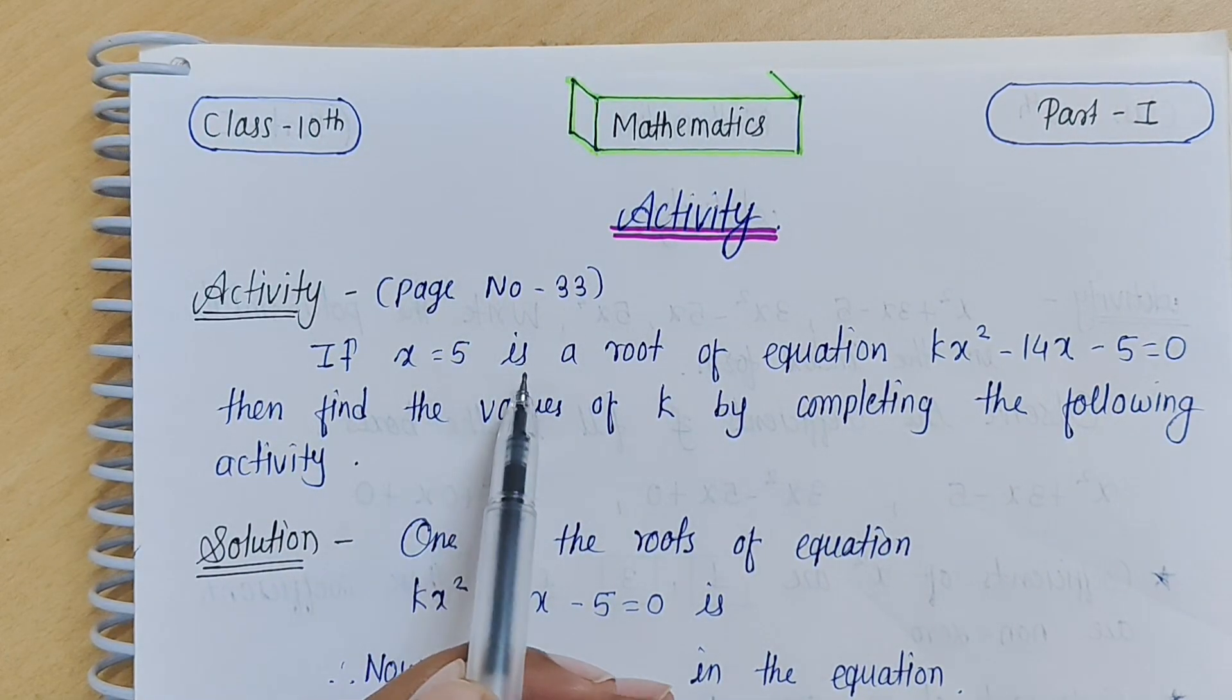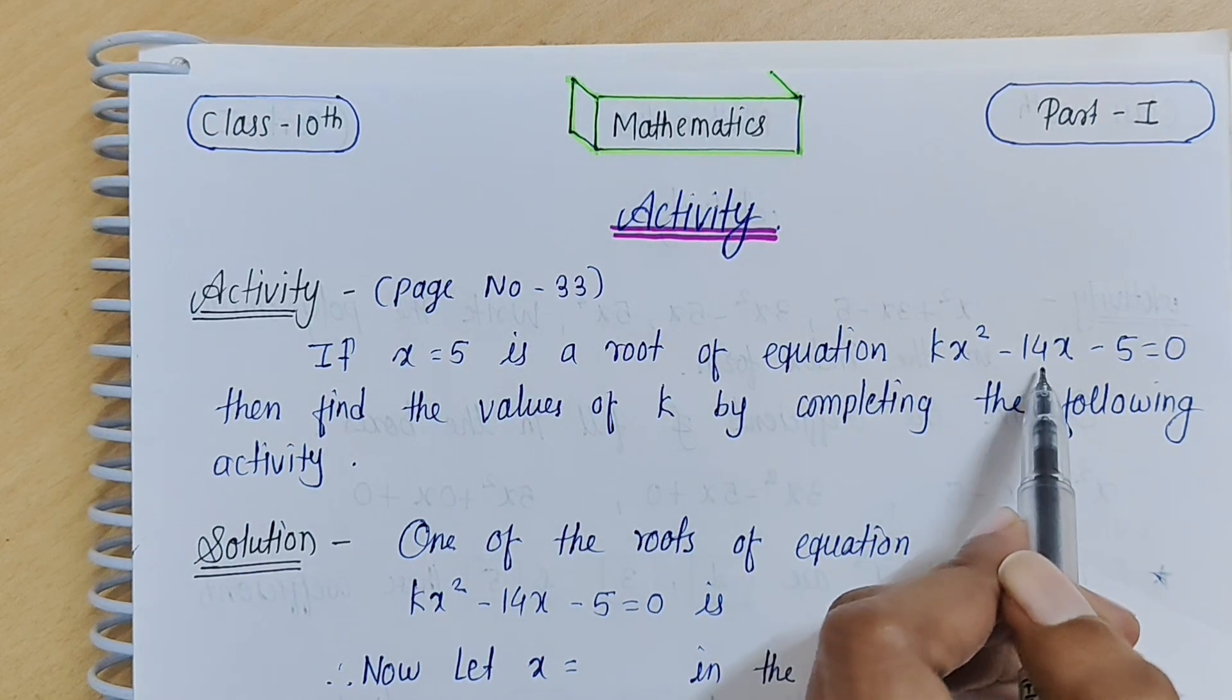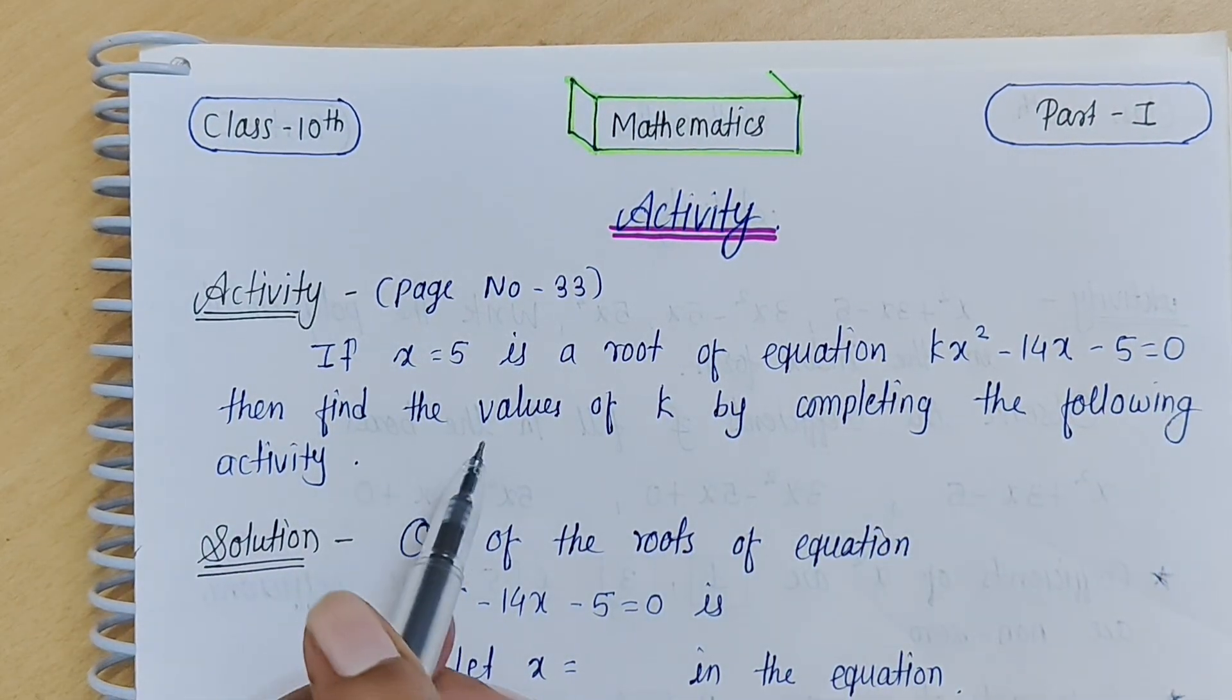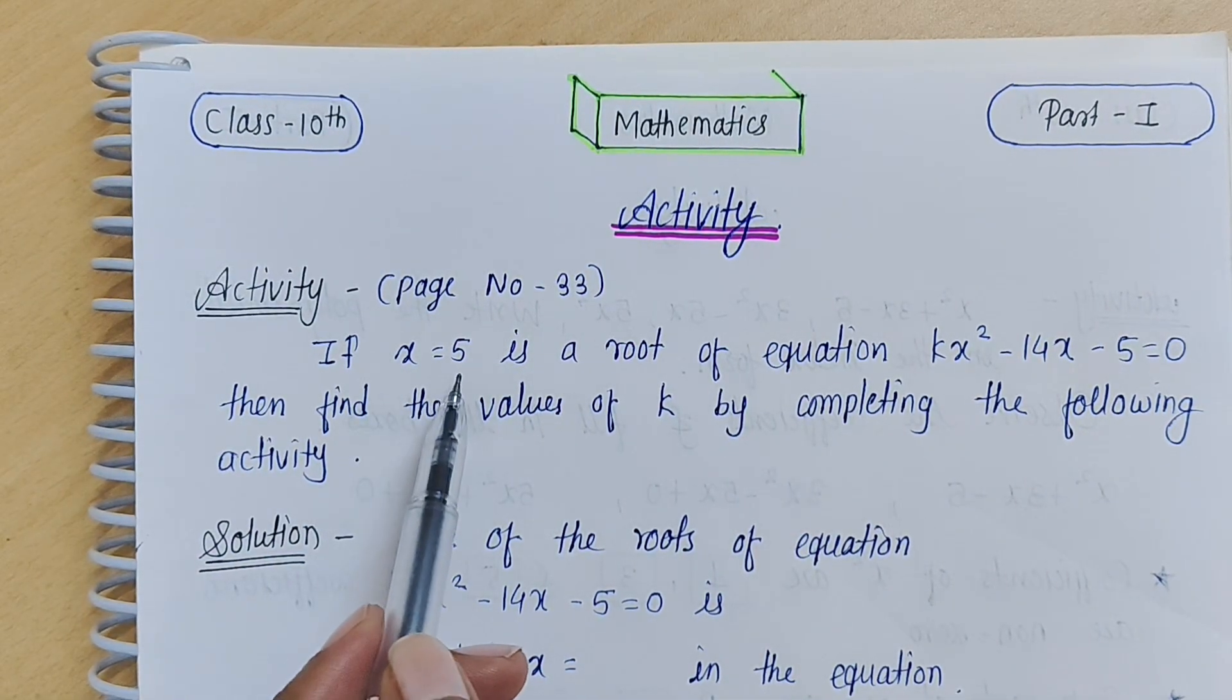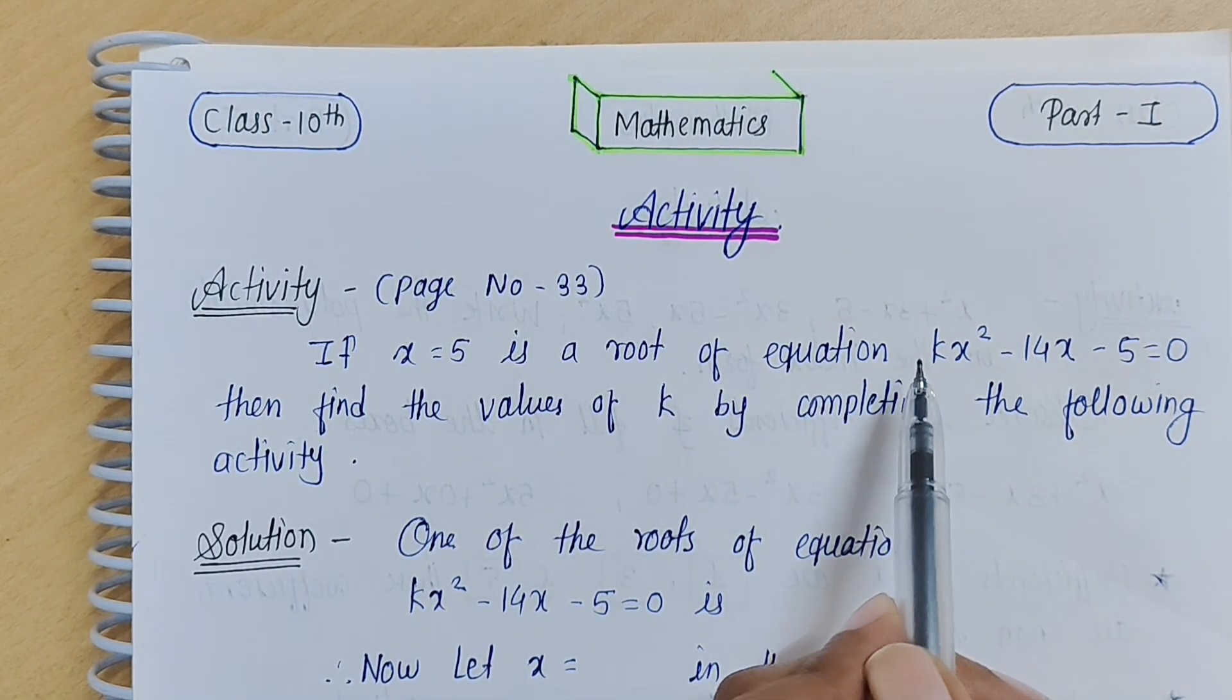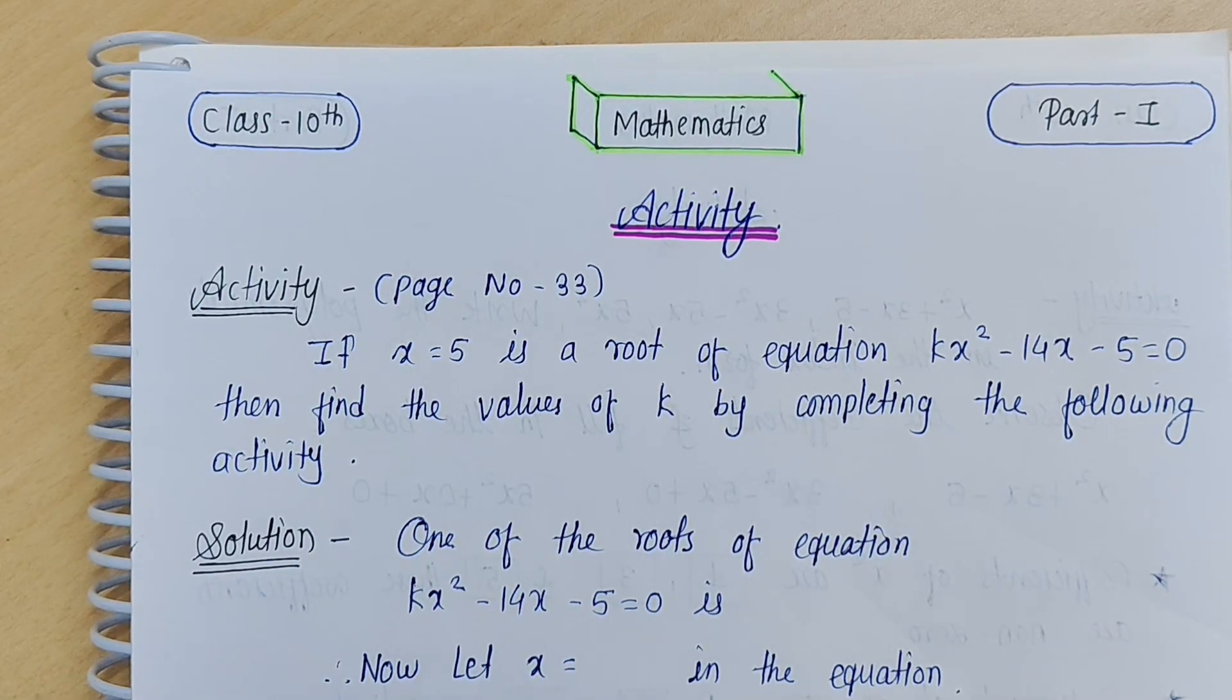The activity is: if x equals 5 is a root of equation kx² minus 14x minus 5 equals 0, then find the value of k by completing the following activity. Here we have x equals 5, which is the root of this equation, and here k is the constant. We have to calculate that value with the help of x equals 5.